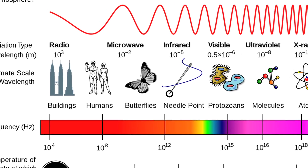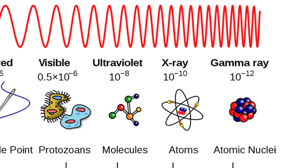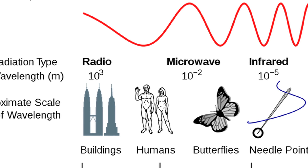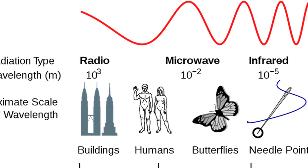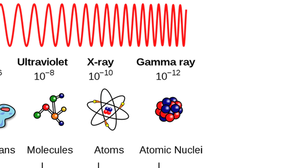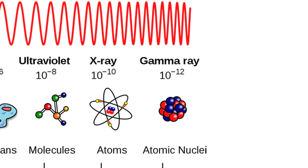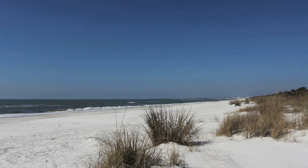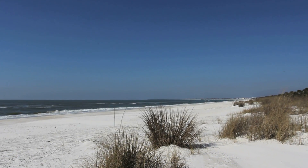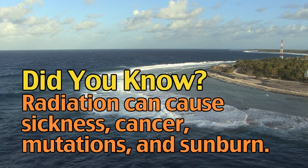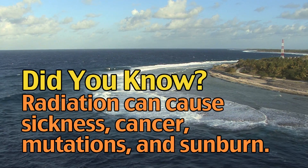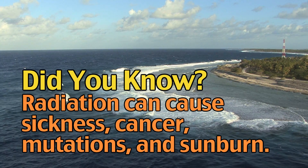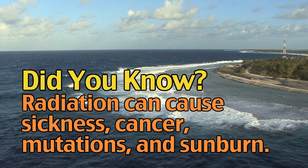The spectrum ranges from radio waves to gamma waves, with radio waves having the longest wavelength and gamma waves having the shortest wavelength. Most types of radiation that can be seen in the spectrum aren't harmful to us. However, high levels of microwaves, infrared, or gamma waves can cause serious physical damage.